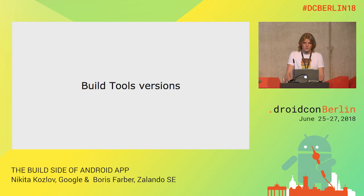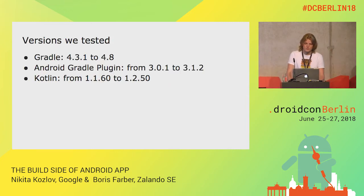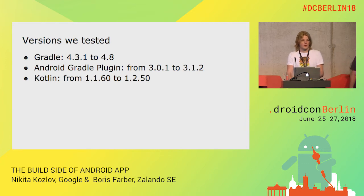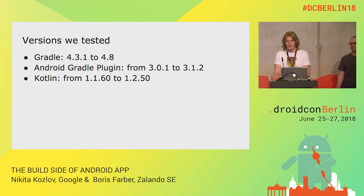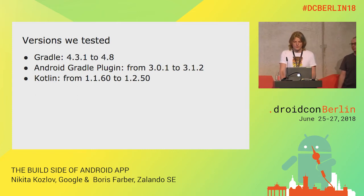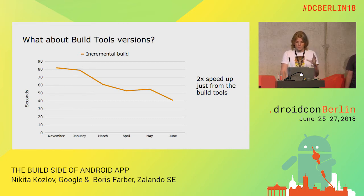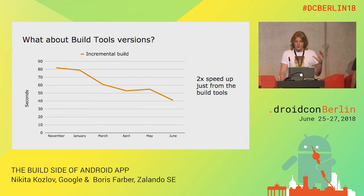Let's start with the build tools version. In order to convince you to always keep your build tools up to date, we generated a project with hundreds of thousands of methods and built it with different versions of Gradle, Android Gradle Plugin, and Kotlin, starting from November last year until now. The results were quite good. Just by incrementing the version of your build tools, the build speed was twice as fast as before — without doing anything additional, just by using the great work done by JetBrains, Gradle, and Google.